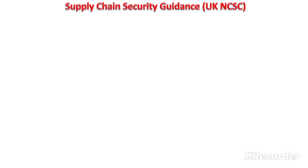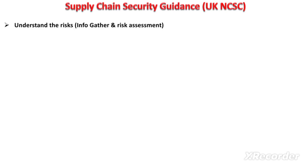This is the supply chain security guidance issued by the UK National Cyber Security Centre. It has 12 principles which are categorized into four categories.